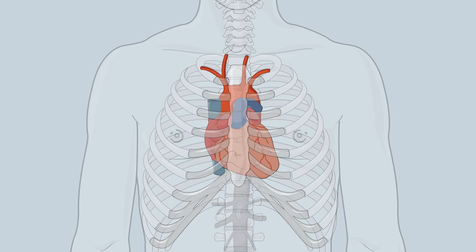Looking at the heart within the thoracic cavity, note the intercostal spaces as shown here. When the heart beats, the apex is palpable along the midclavicular line at the 5th intercostal space.